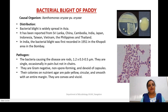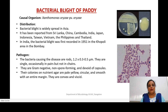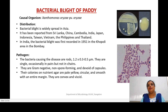This particular disease caused by Xanthomonas oryzae — that is bacterial blight in paddy — is distributed widely in the Asian continent. It is reported from Sri Lanka, China, Cambodia, India, Japan, Indonesia, Taiwan, Vietnam, Philippines, Thailand, and others. In India, it was reported for the first time in 1951 in Mumbai.